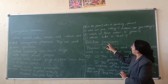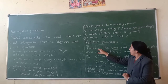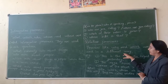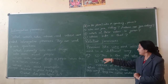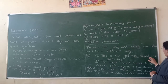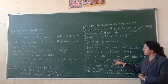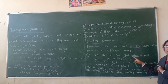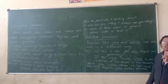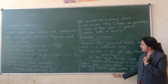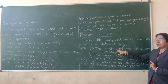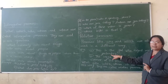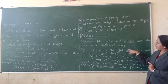Now we will learn about relative pronouns. Pronouns like who and which are also used in a different way. For example: This is the girl who helped me yesterday. Here we have used who, but this word is not used for asking questions. This word is called a relative pronoun.